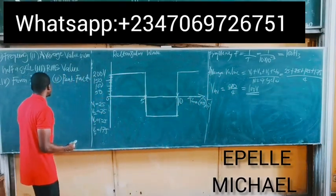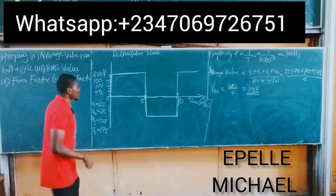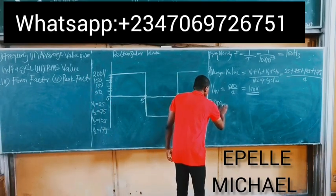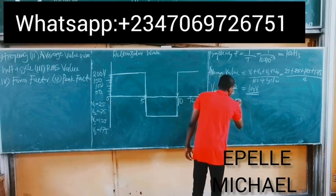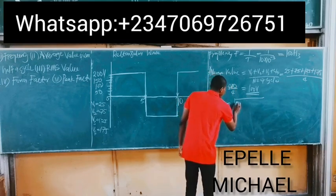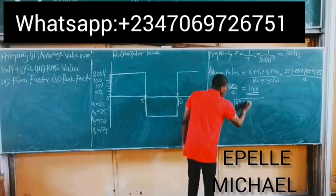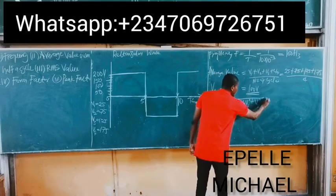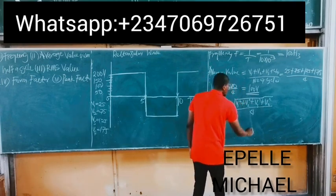Next is to find the root mean square value. RMS value is simply equal to the square root of the sum of the squares of the mid-ordinate values, V1 squared, plus V2 squared, plus V3 squared, plus V4 squared, all over number of cycles, which is 4.